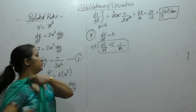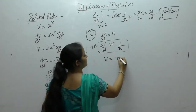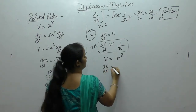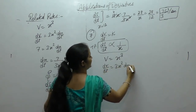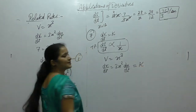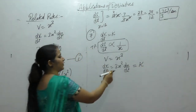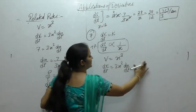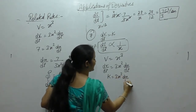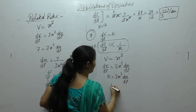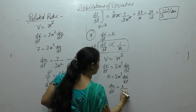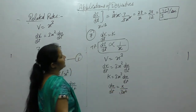Volume of cube is equal to x cube. dv upon dt equals 3x square dx by dt. It is given that this equals constant k. From here we can write dx by dt is k upon 3x square.